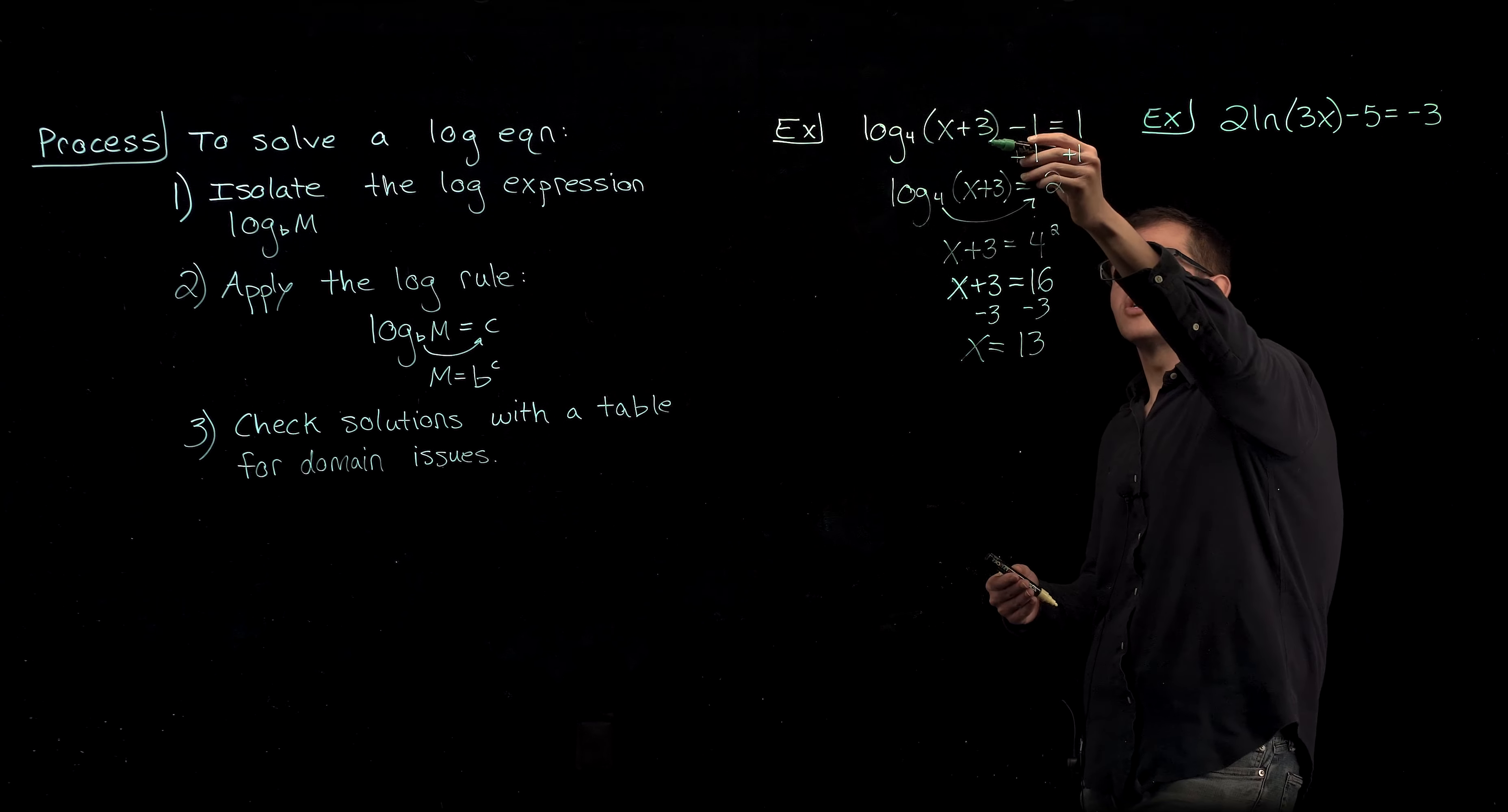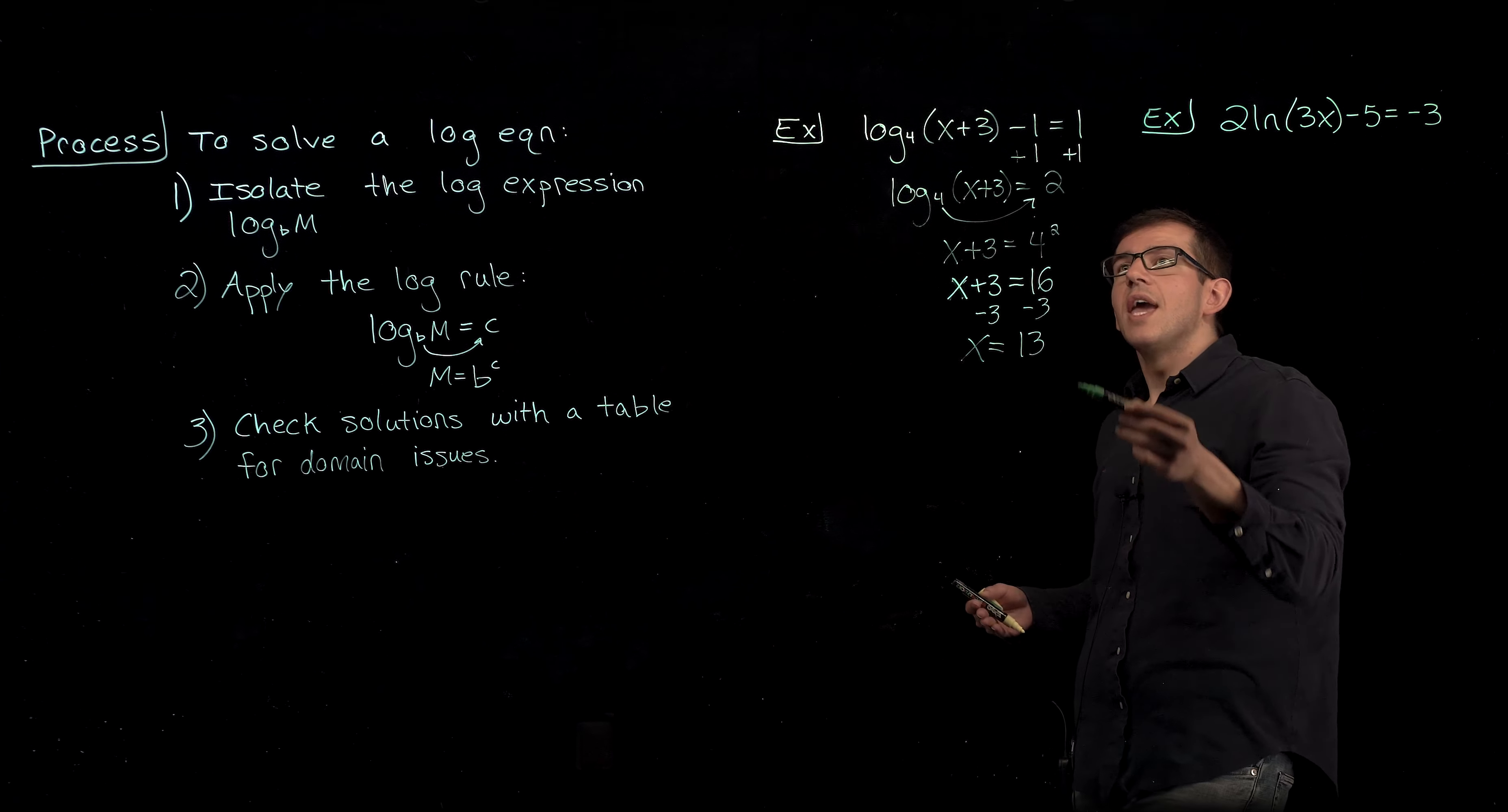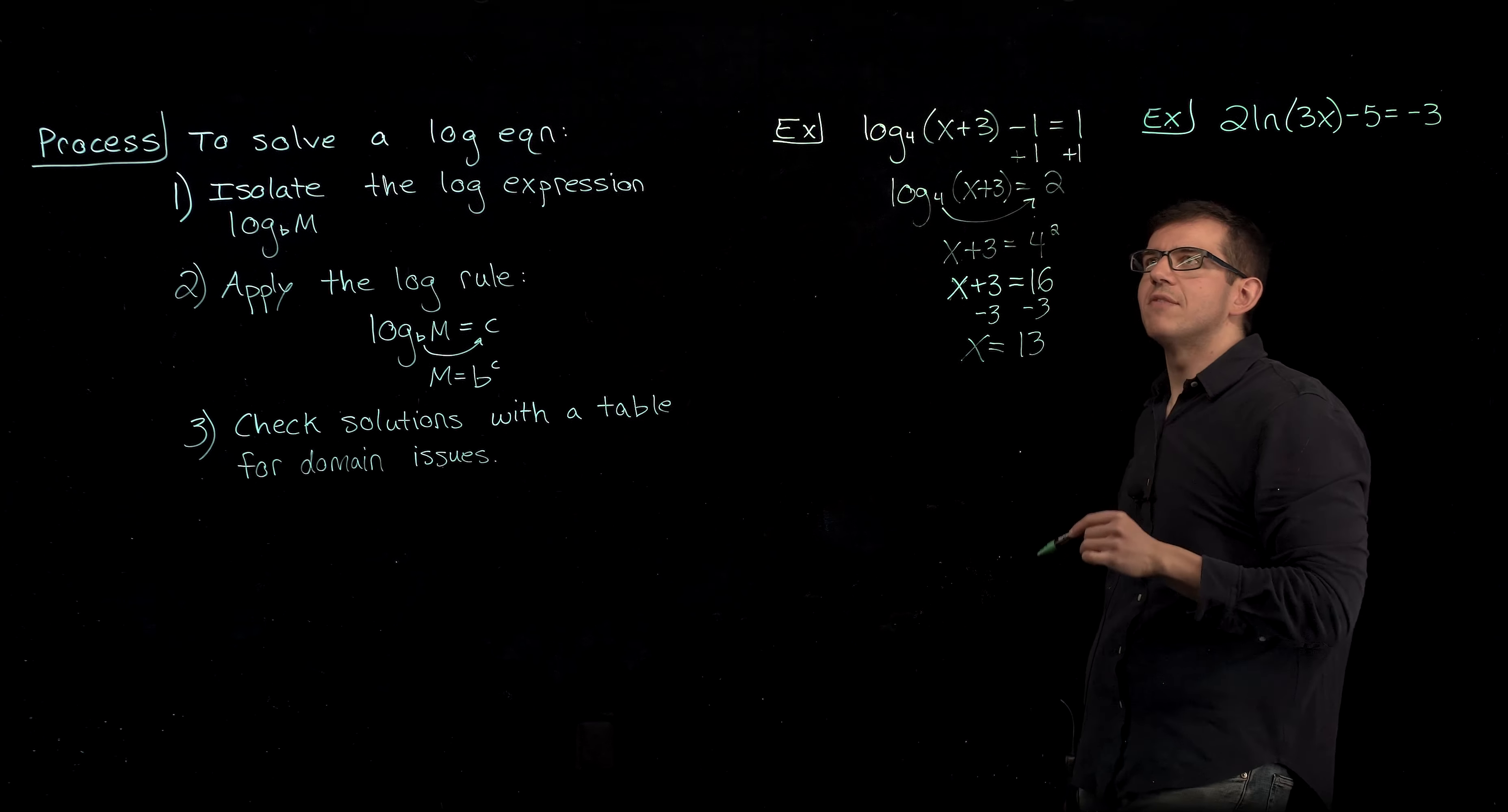This isn't to say that we're checking this value like we would an exponential equation, plugging it back into the original problem to see if it all simplifies to give us 1. That won't always work because when you perform any type of condensing or any simplification, it may end up working out. But what we care about is that this 13 will not cause a value of 0 or a negative inside of that log.